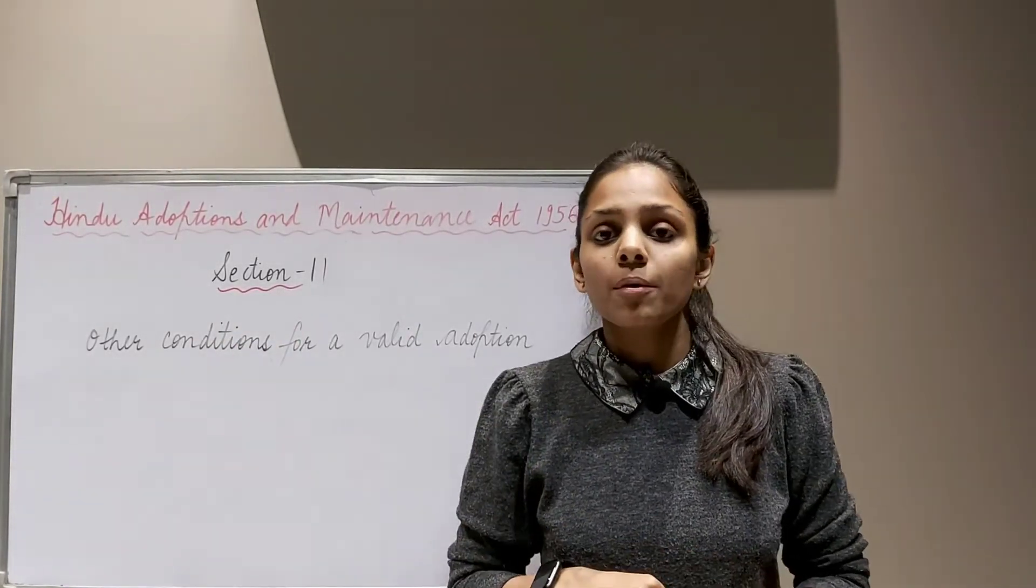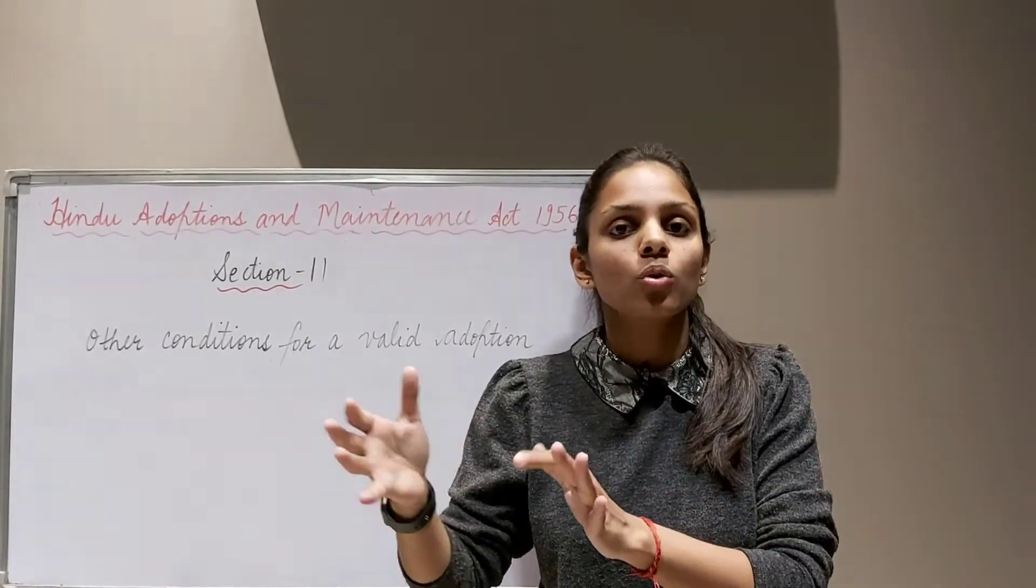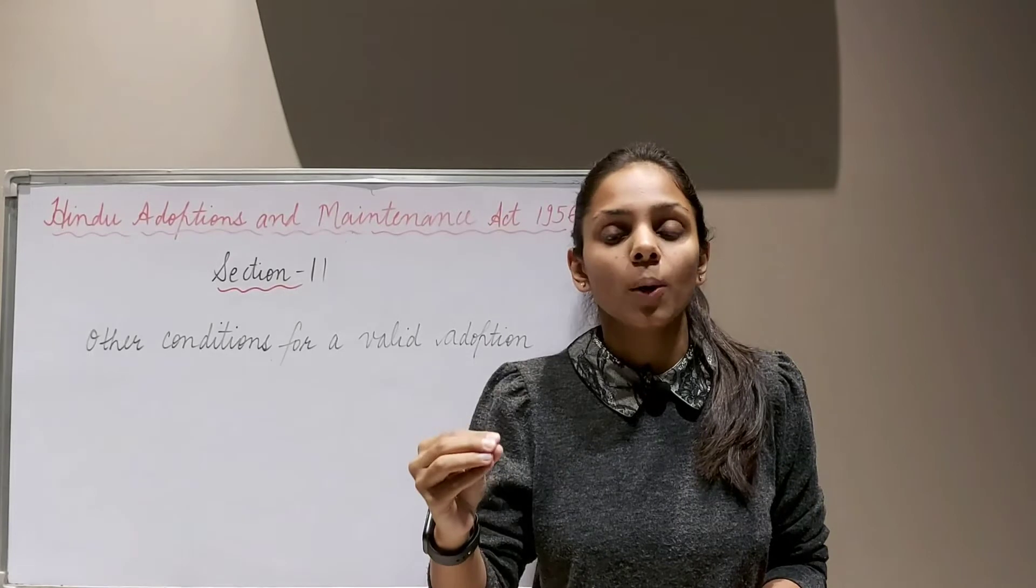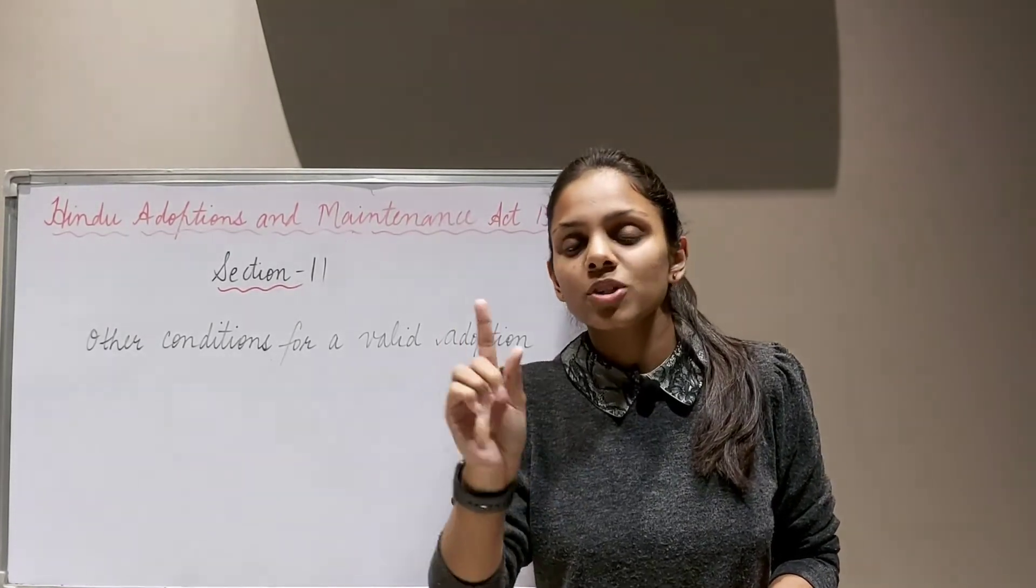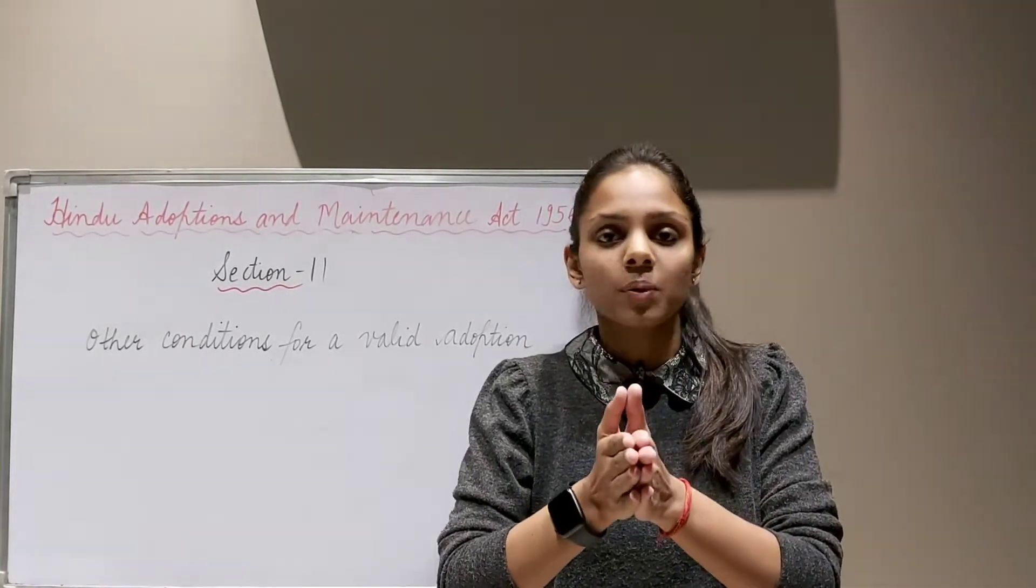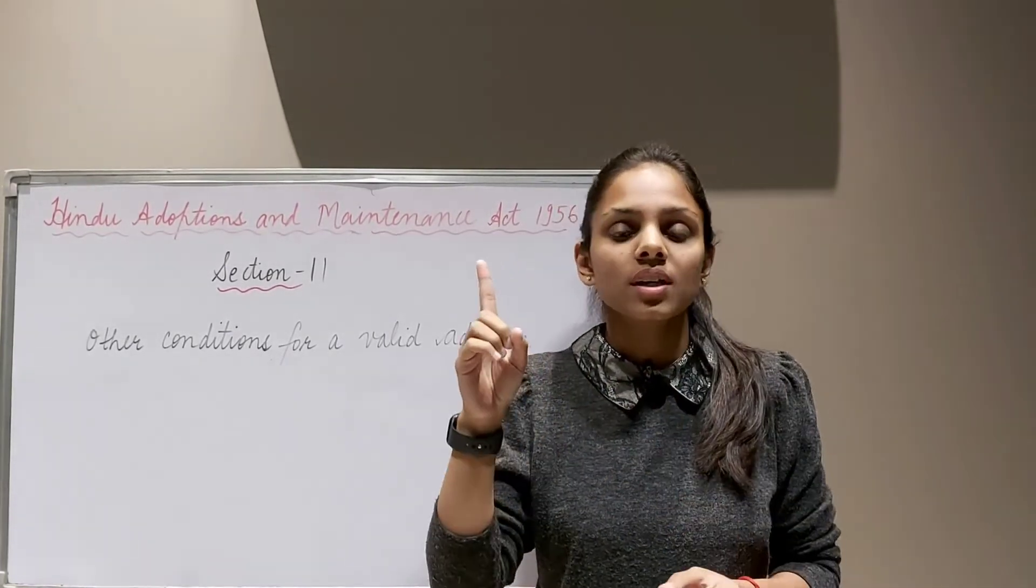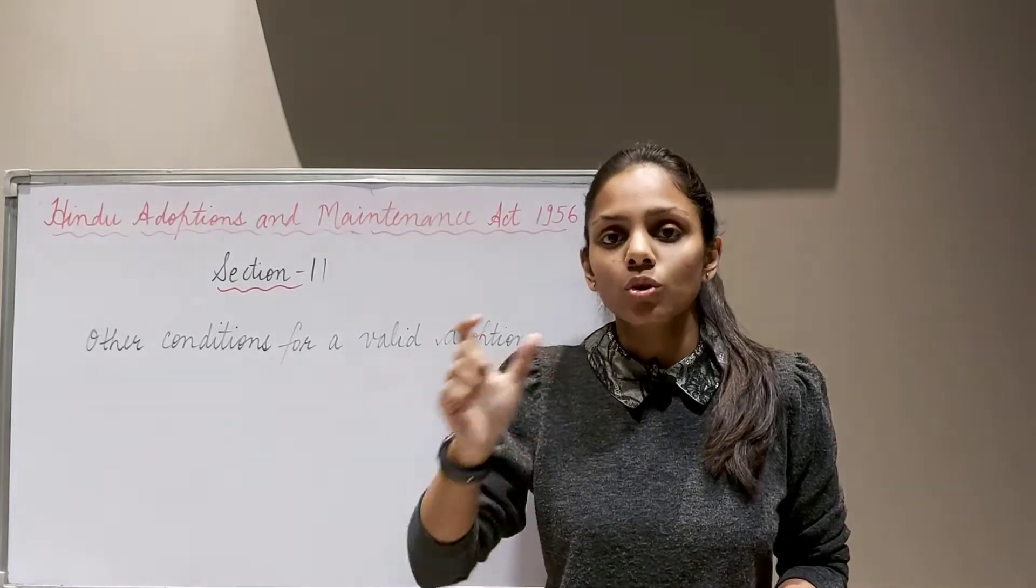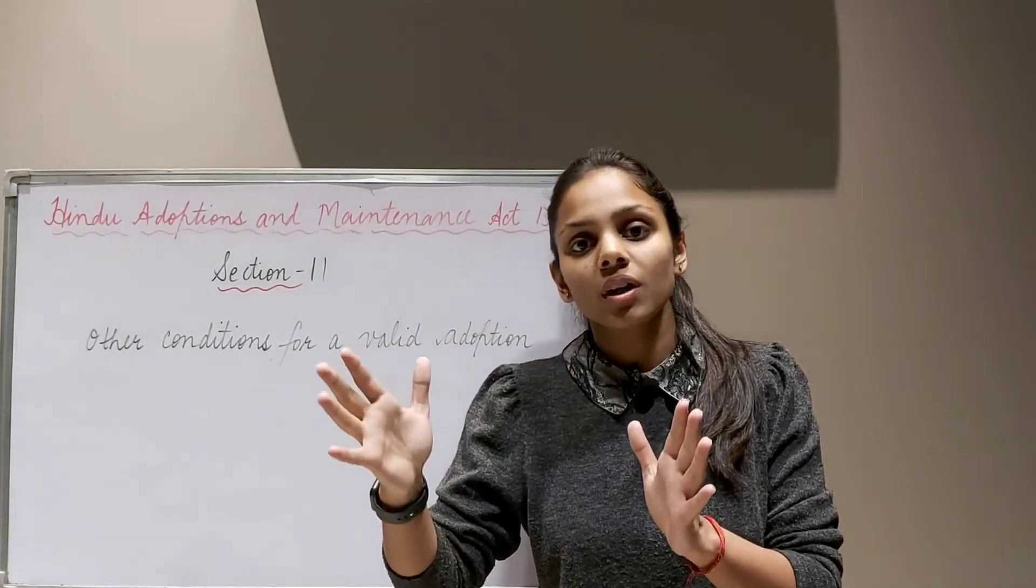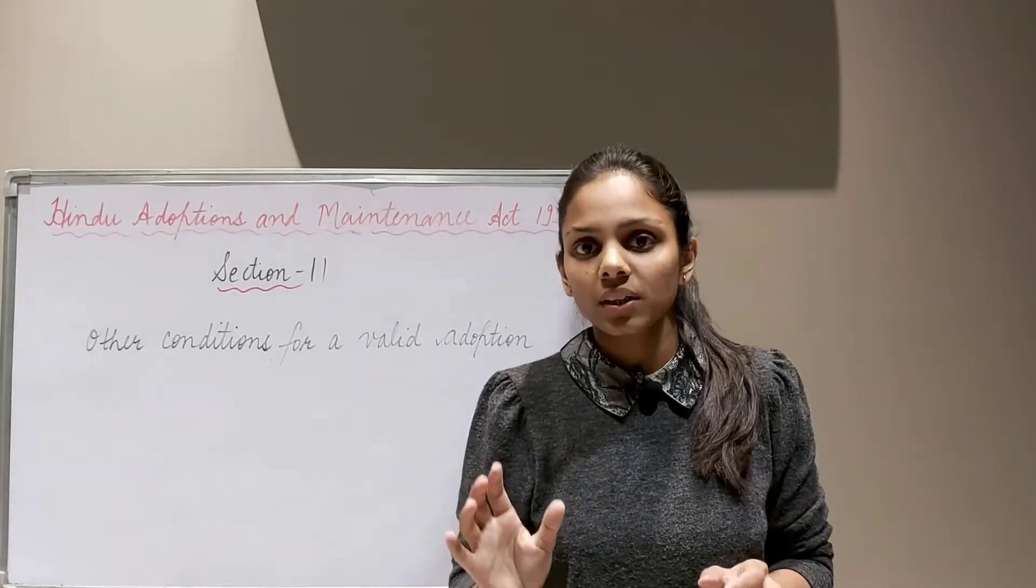These are essential requisites which are to be fulfilled, general in nature, apart from those enlisted under section 6. Provision number 5 states that the same child cannot be simultaneously adopted by two or more persons. We already discussed this in section 10 - one child can be adopted by one person at a time. Husband and wife are not two people - they are adoptive parents, considered one in the eyes of law.